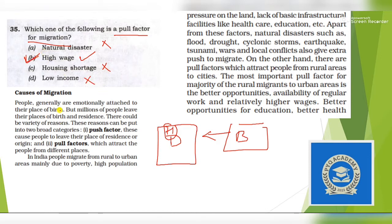This is a question directly taken from Class 12 Geography, Human Geography portion. In this you can see here that better opportunities for health, education, and relatively higher wages can be pull factors.